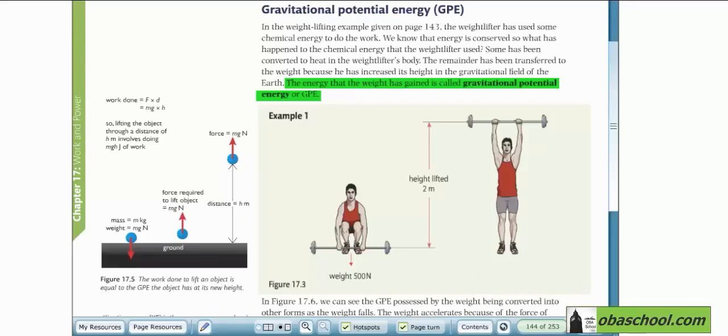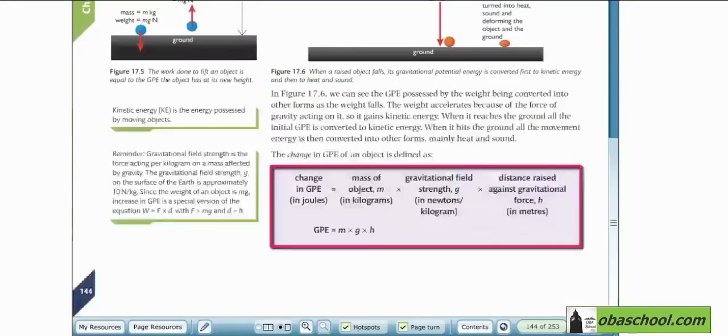Now, let's talk about the equation of change for GPE, where it is formed of the mass of the object, M, in kilograms, multiplied by the gravitational field strength, multiplied by the distance raised against the gravitational force. So all of these three multiplied by each other give us the change in GPE.